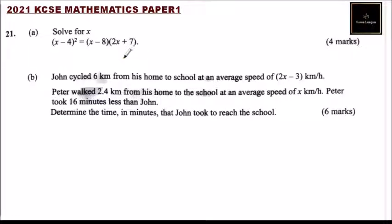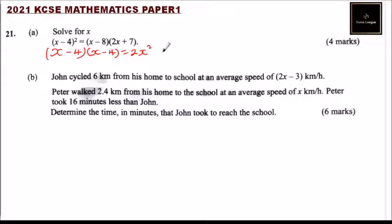To solve for x, we need to expand. We write (x minus 4) cross (x minus 4) on the left side. On the right side, expanding (x minus 8)(2x plus 7): x multiplied by 2x gives 2x squared, x multiplied by 7 gives 7x, minus 8 multiplied by 2x gives minus 16x, and minus 8 multiplied by 7 gives minus 56.